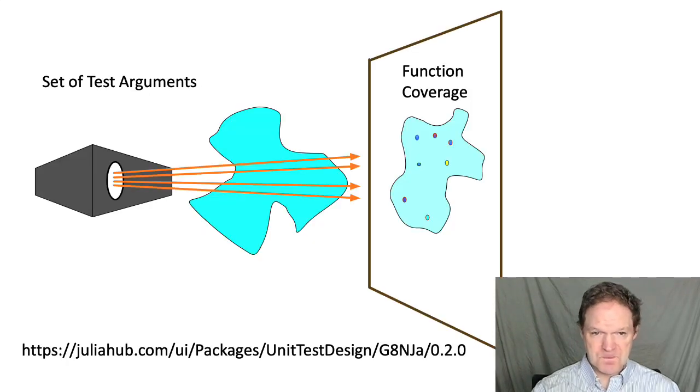So that's it. The unit test design package is one arrow in the quiver of testing techniques for Julia. It's a black box testing technique, meaning it doesn't use any knowledge about what happens inside the test function. It ignores our intuition about what might be wrong with the code,